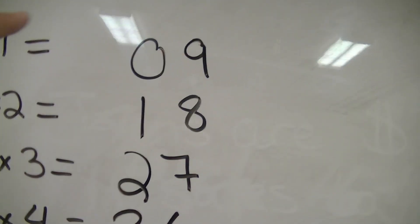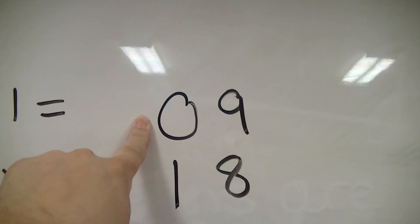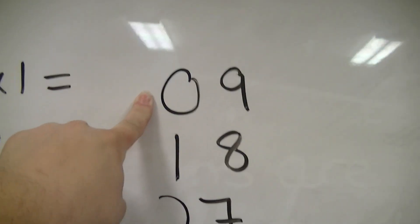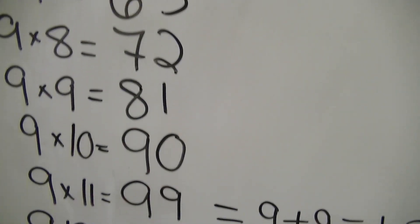So, if you notice, over here, one times nine, I can put a zero there, doesn't matter, right? So, if I start with zero, I'm just going to write one, two, three, four, five, six, seven, eight, nine.